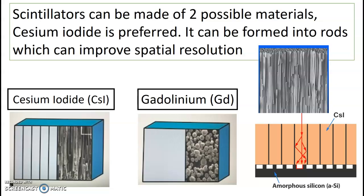Scintillators can be made up of two materials, two possibilities: cesium iodide, which forms into rods, and gadolinium, which has more of a circular structure. Cesium iodide is preferred because it can be formed into rods, which improves your spatial resolution.